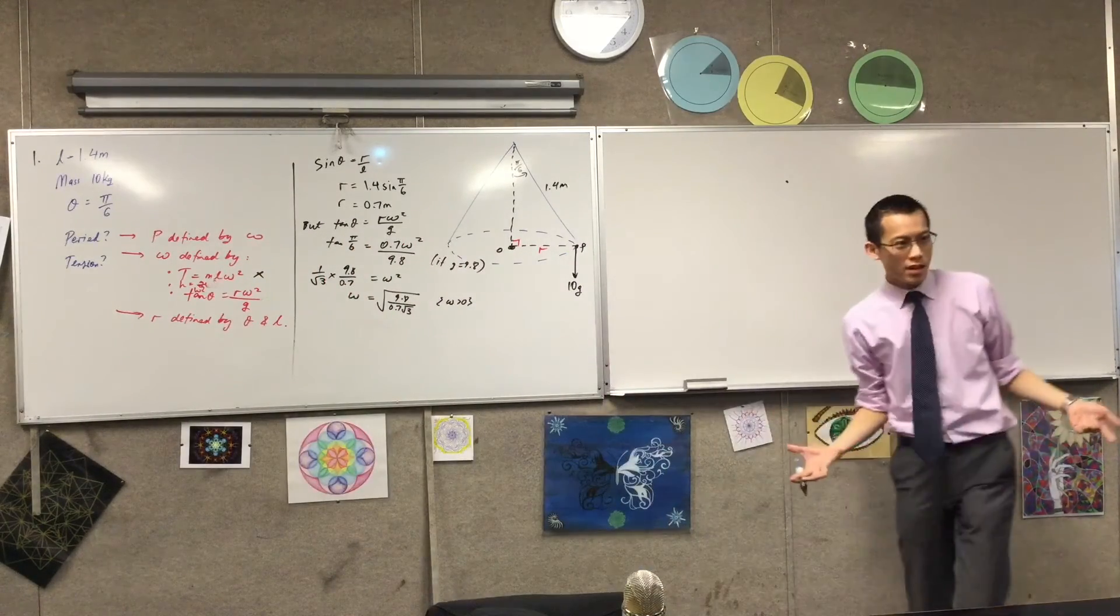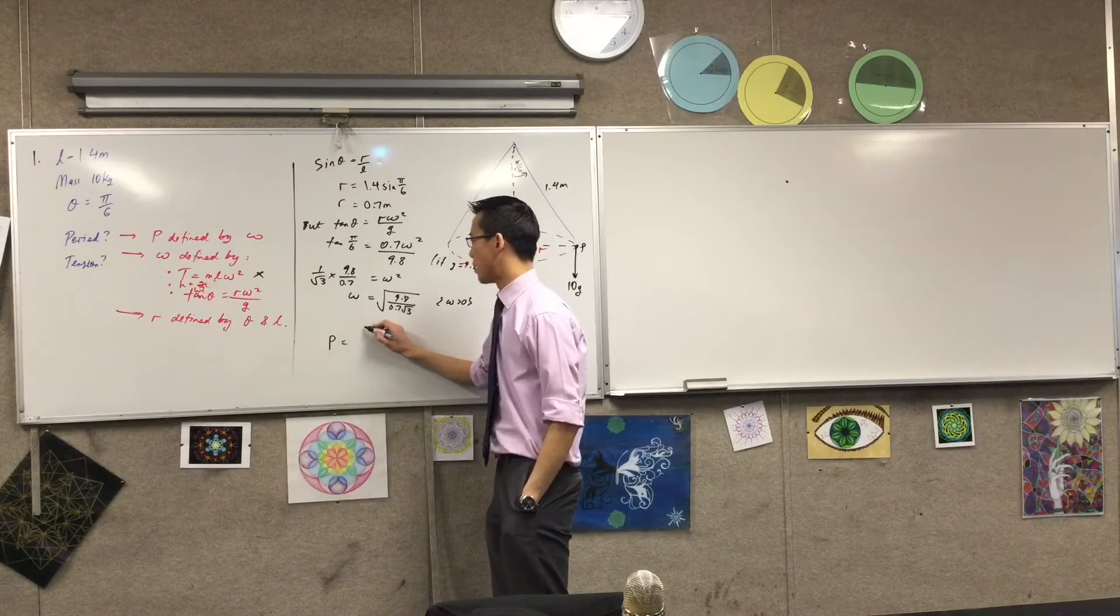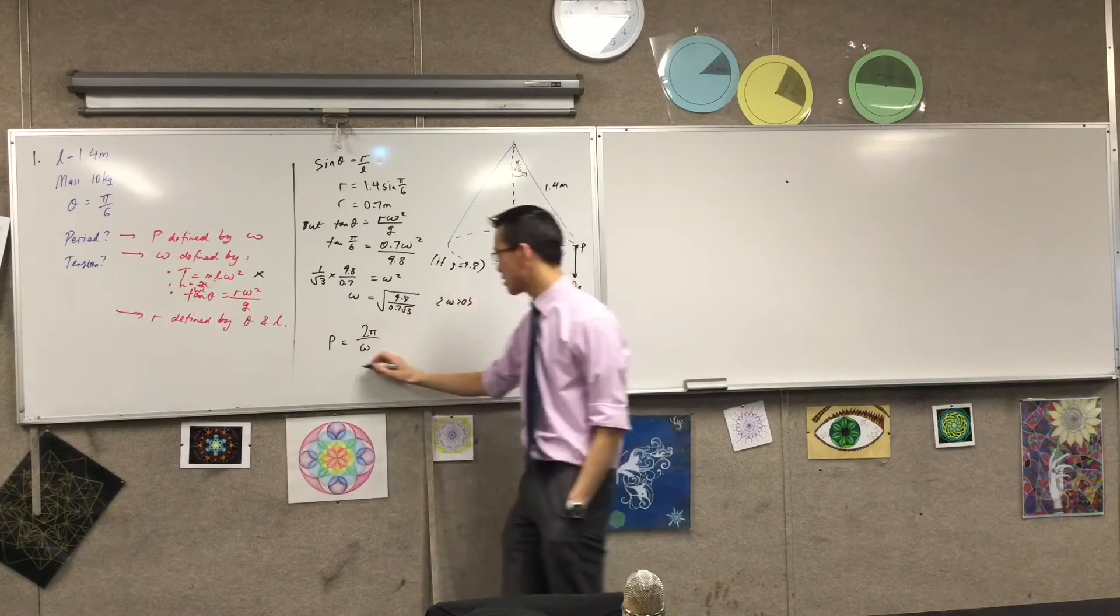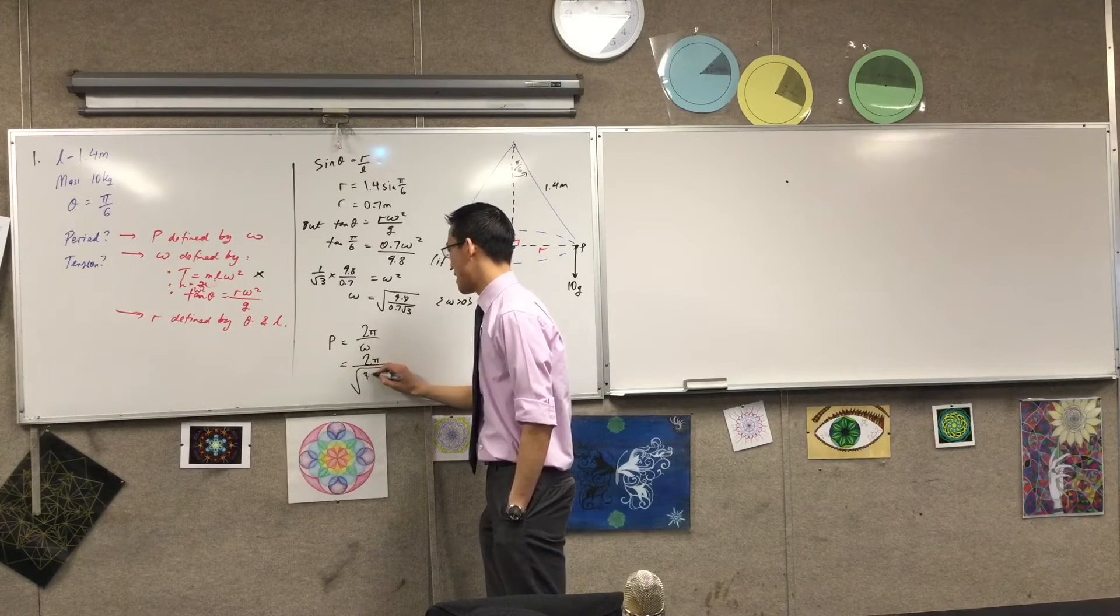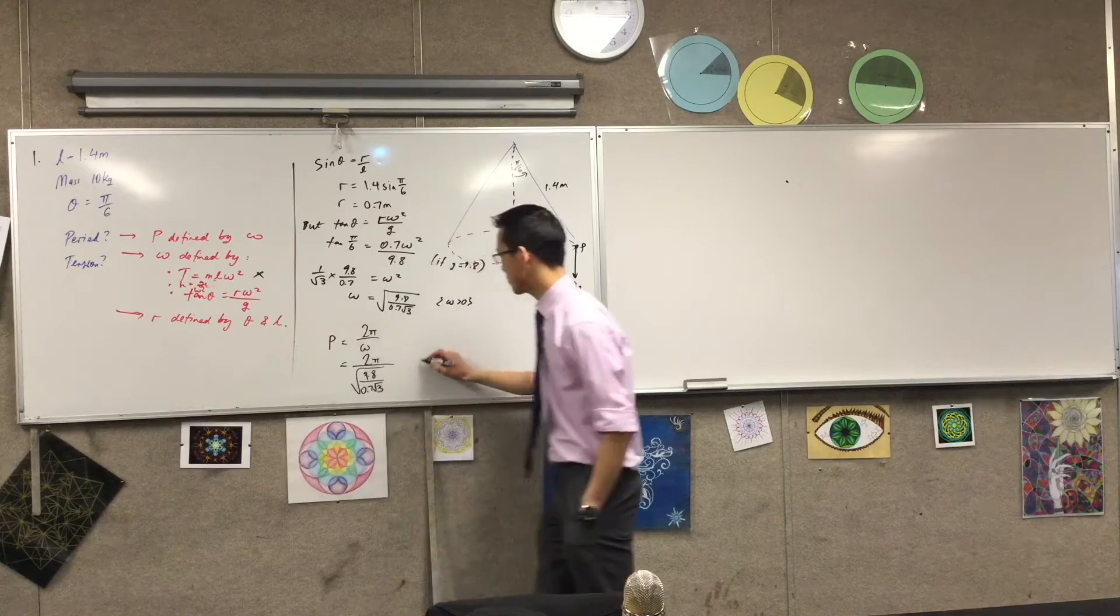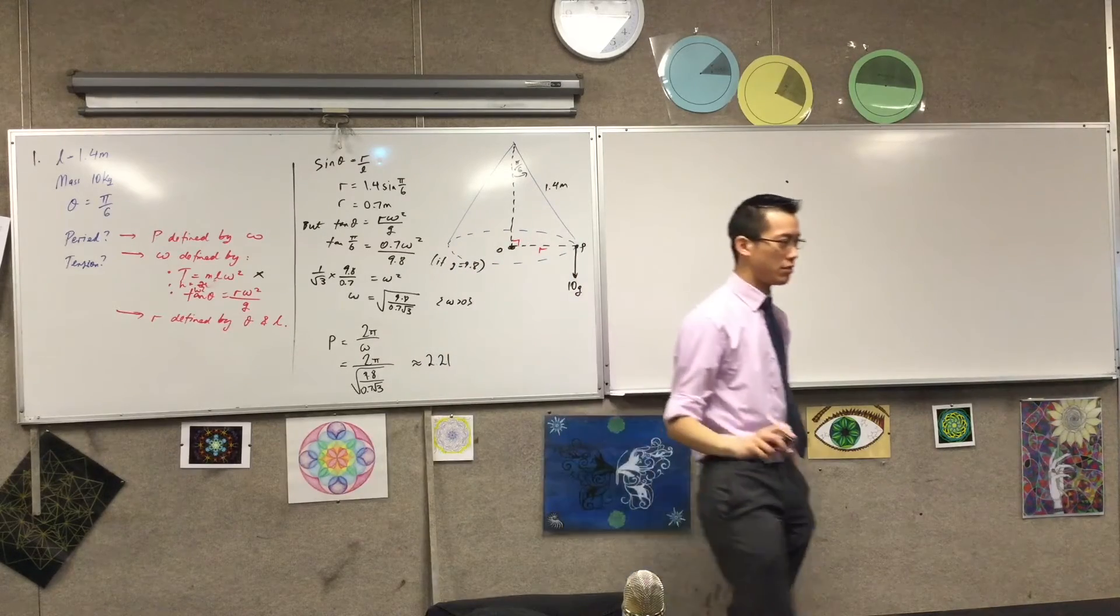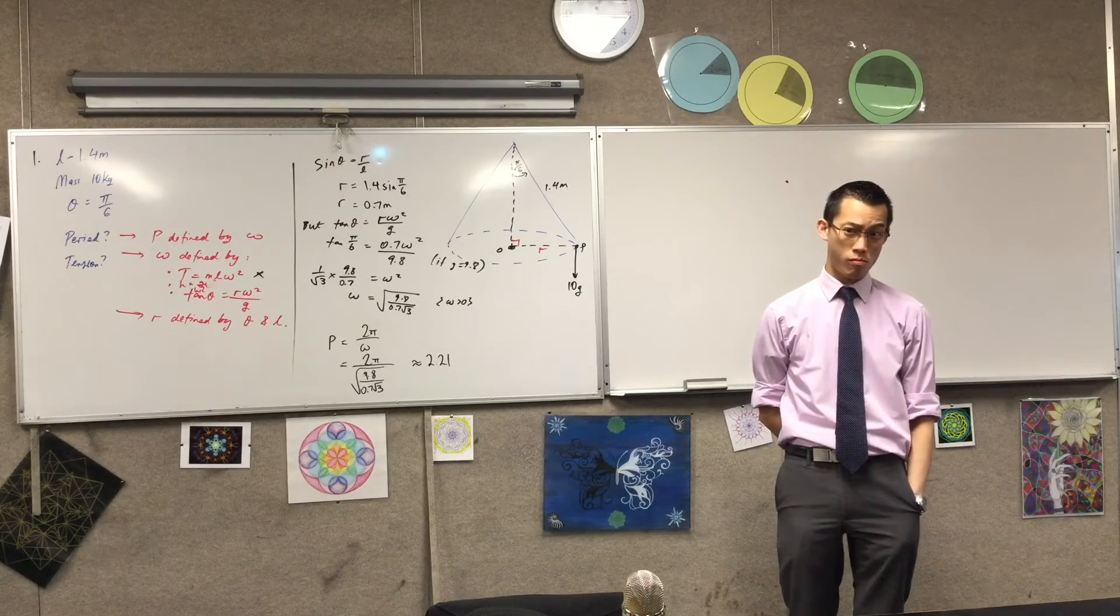Why did I want omega in the first place? To find the period. To find the period. Okay. So the period is 2 pi on omega. So it's 2 pi on this thing. 2 pi on the square root of, and now this is the thing that we're ready to evaluate. It's 2.21. 2.21 what? Radians per second. Radians per second. Oh. No, it's not.